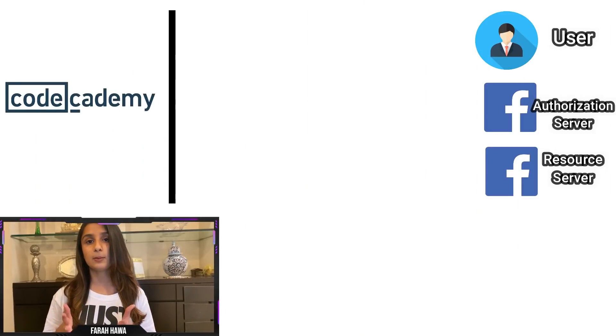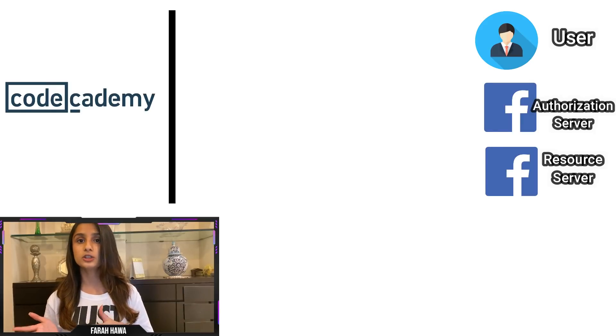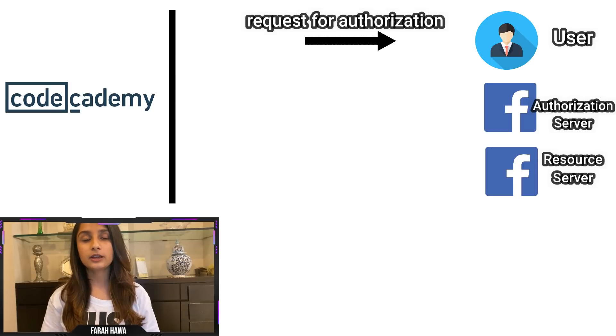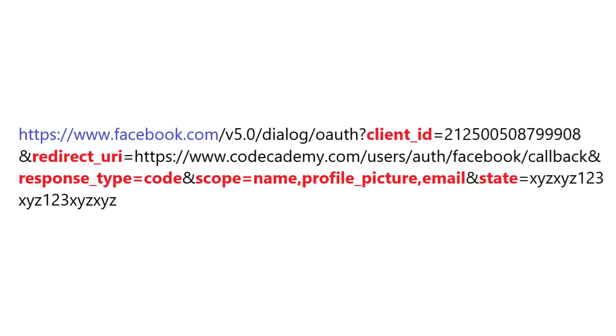The authorization code grant is used when an application requests for an authorization code and then exchanges it for an access token, which gives it access to the user's account details. Let's look at the flow of this — for better understanding we'll use Code Academy as the application or client and assume that the user logs in through Facebook. First, when the user clicks on the login with Facebook button, he is redirected to Facebook's authorization server with a link containing all the parameters that will be verified by Facebook.